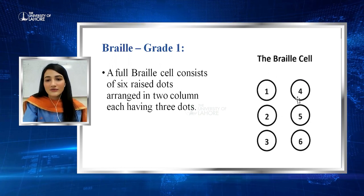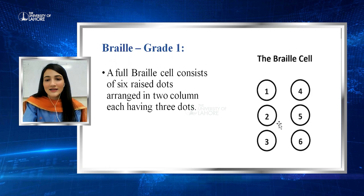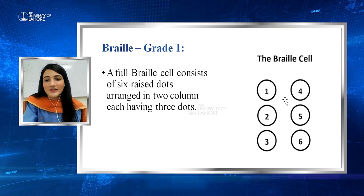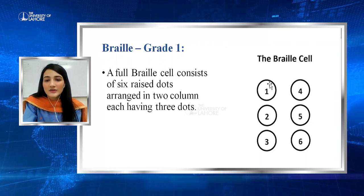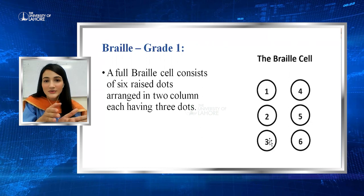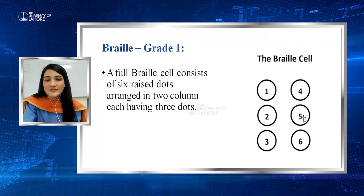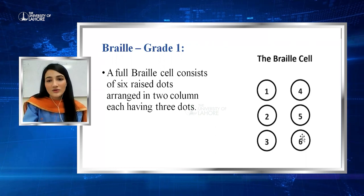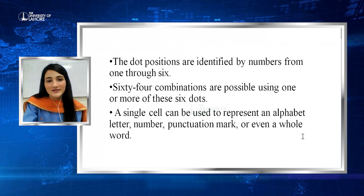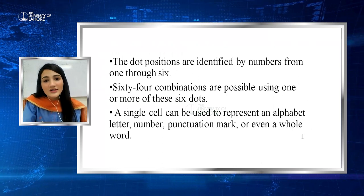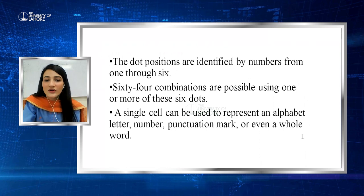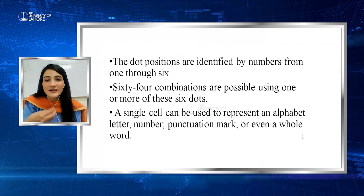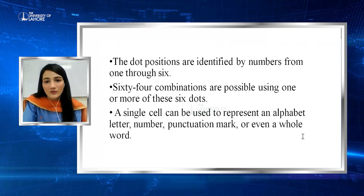The six dots are numbered 1, 2, 3, 4, 5, and 6. There are two columns and three rows. Dots 1, 2, and 3 are on the left side of the Braille cell and dots 4, 5, and 6 are on the right side. It consists of two columns and three rows with six raised dots. There are 64 combinations possible using one or more of these six dots, and a single cell can represent an alphabet letter, a number, a punctuation mark, and even a whole word.